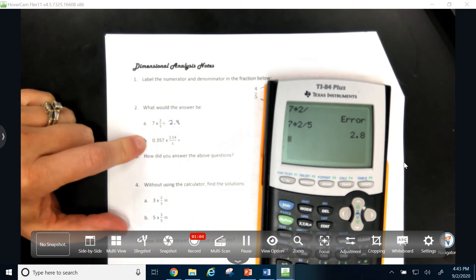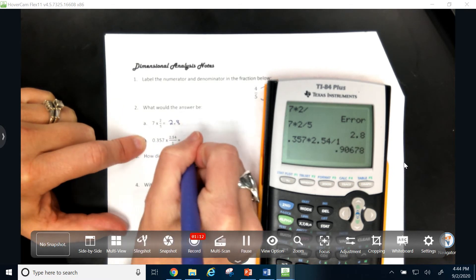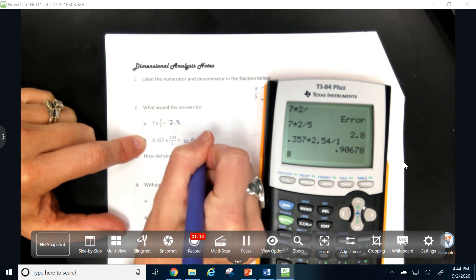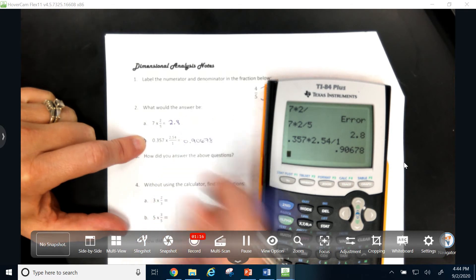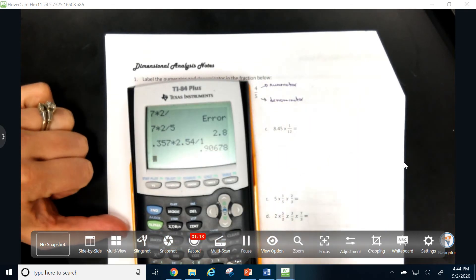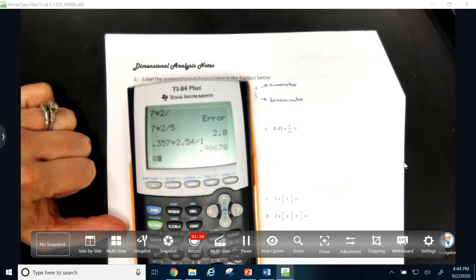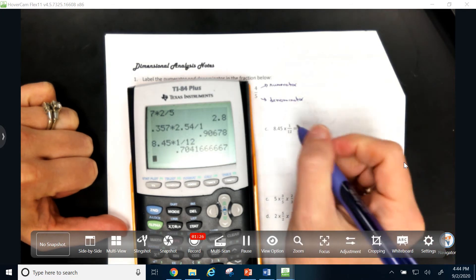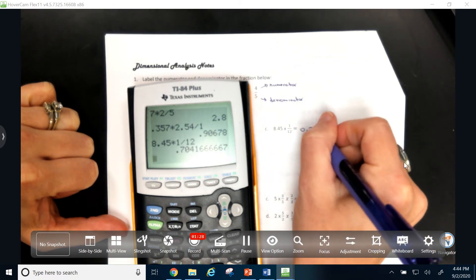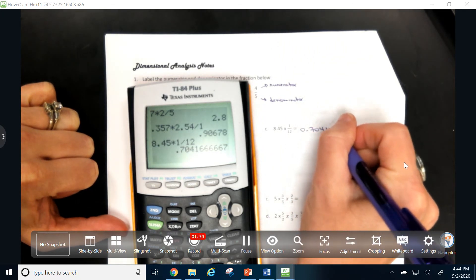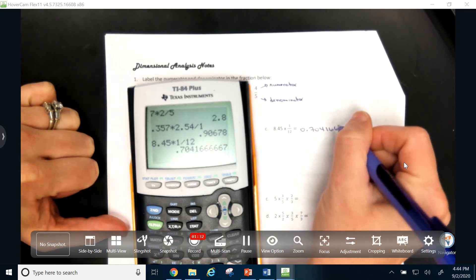We know that 0.357 times 2.54 divided by 1 would be 0.90678. We know how to put in this number. 8.45 times 1 twelfth would be times 1 divided by 12. That would be 0.70416666. You get the idea, right?